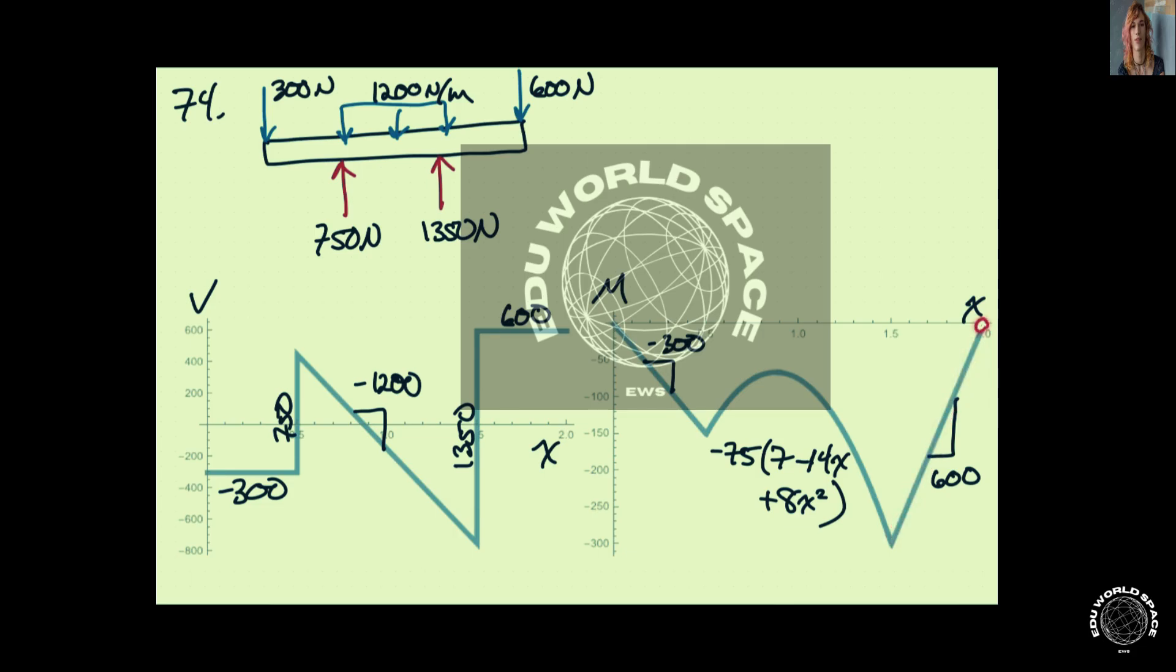Now, in the middle here, we actually have a quadratic. And if we integrate what this curve is and then match a boundary condition here, or make sure that the moment is continuous at this point, we get that that function is minus 75 times the quantity, 7 minus 14x plus 8x squared. This is the parabola here.